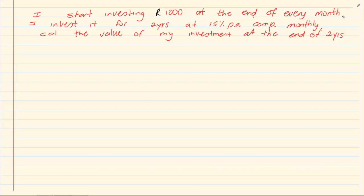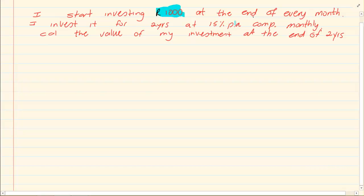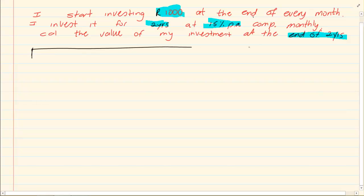Let us take the next question. It is also a future value. You are investing a thousand rand at the end of every month. But they didn't tell us that we are starting at the beginning. So you're only going end of January, end of February, and you invest for two years at fifteen percent per annum. Calculate the value at the end of two years. On the timeline you are starting here and going to two years — end of January, end of February — going at the end of every month.